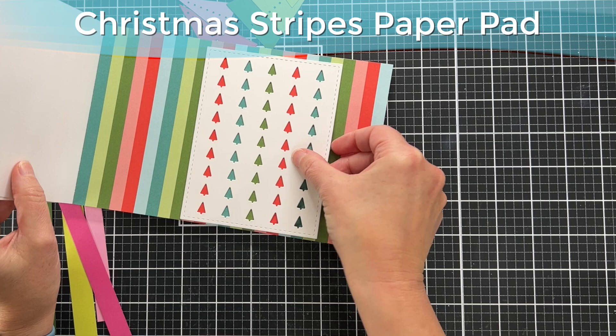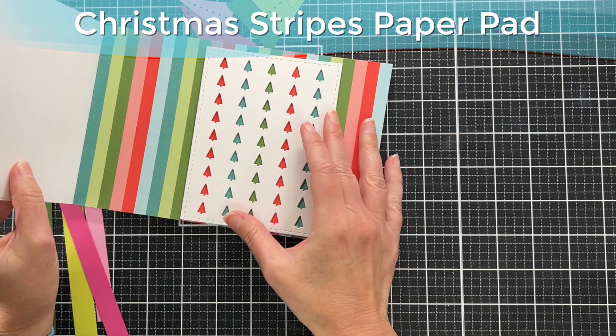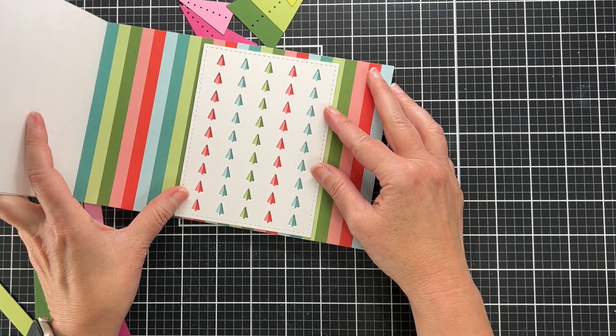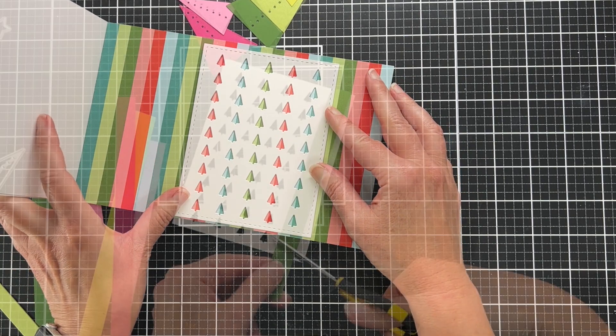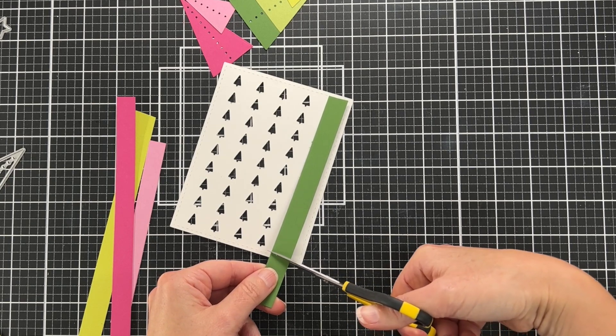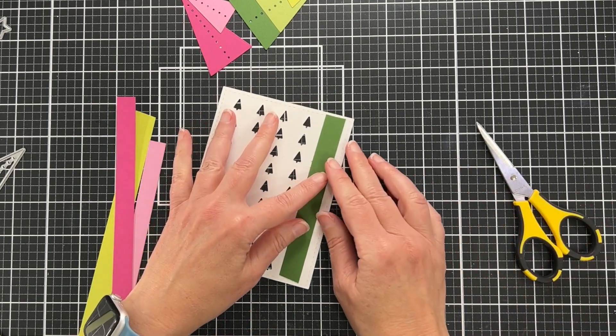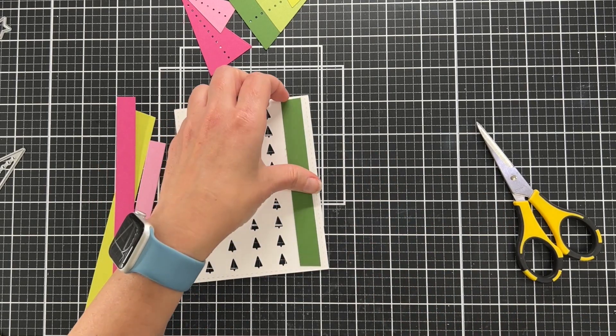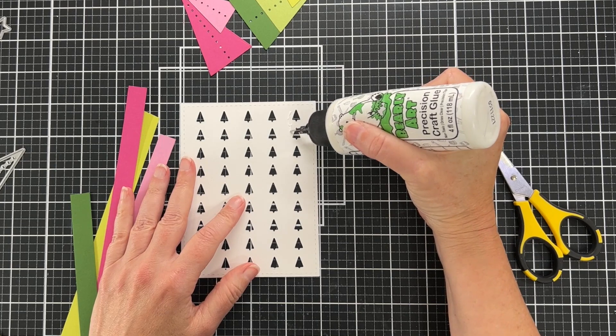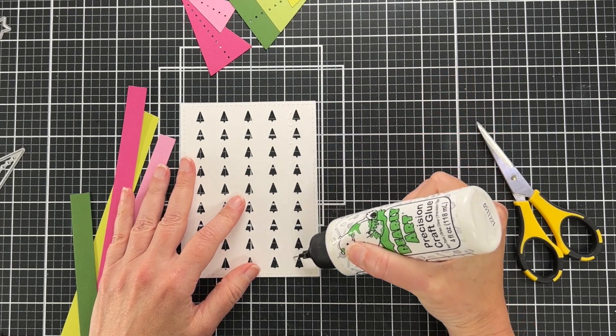This is another paper pad from Waffle Flower, the Christmas Stripes. I could have used this paper pad, but I love my pinks and greens, so I wanted to kind of just make my own strips. Now I'm just cutting them to length and I will simply glue these strips to the back of my panel.